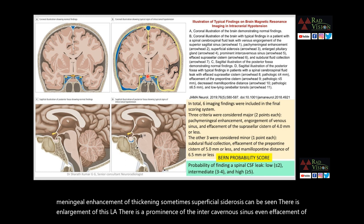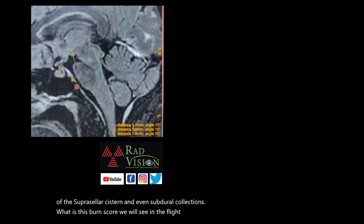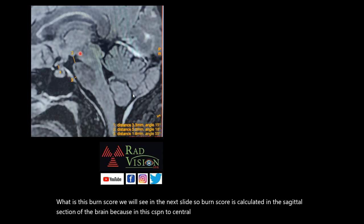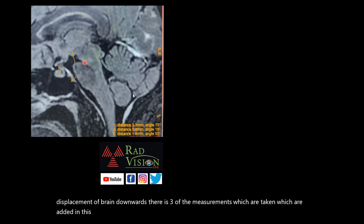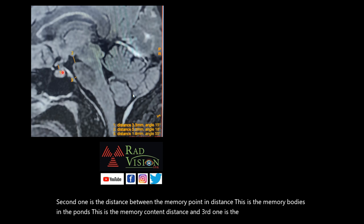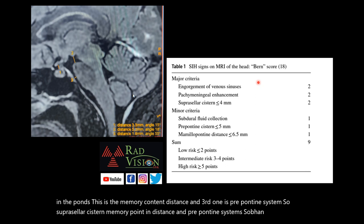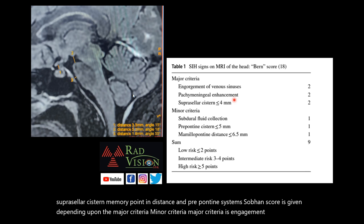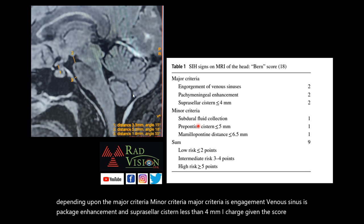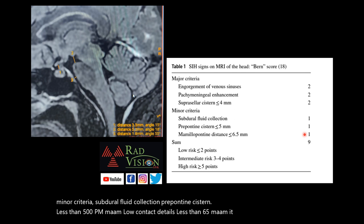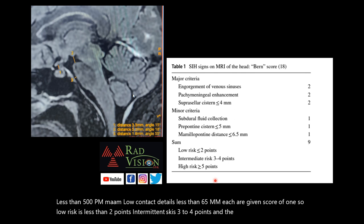What is the BERN score? On sagittal sections of the brain, there are three measurements altered in spontaneous intracranial hypotension due to downward displacement: the suprasellar cistern, the mammillopontine distance (between mammillary bodies and the pons), and the prepontine cistern. Major criteria — each scored 2 points — are engorgement of venous sinuses, pachymeningeal enhancement, and suprasellar cistern less than 4 mm. Minor criteria — each scored 1 point — are subdural fluid collection, prepontine cistern less than 5 mm, and mammillopontine distance less than 6.5 mm. Low risk is less than 2 points, intermediate risk is 3–4 points, and a BERN score greater than 5 is significant and high risk.